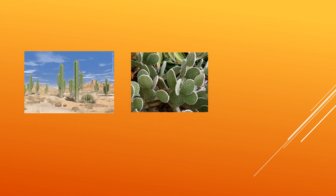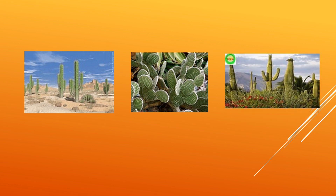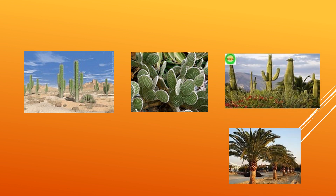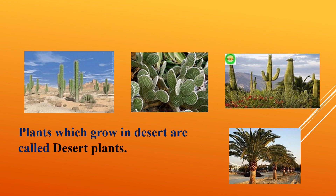Can you identify these plants? These are different types of cactus. Date palm. Can you tell me where are they usually found? Plants like different types of cactus, date palms, etc. are seen in deserts. Plants which grow in desert are called desert plants.